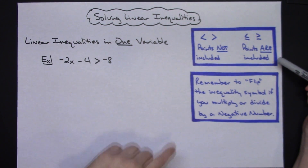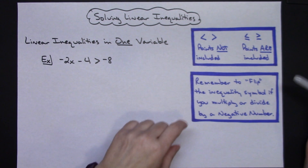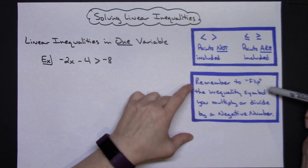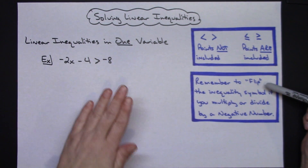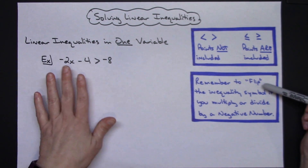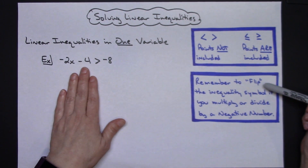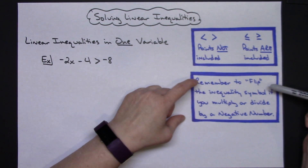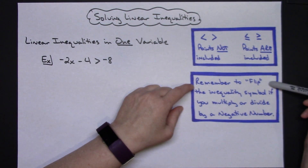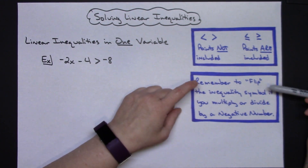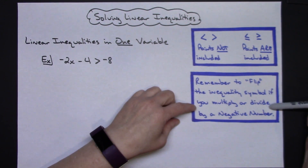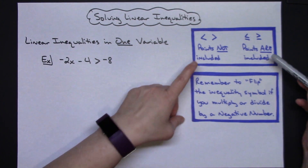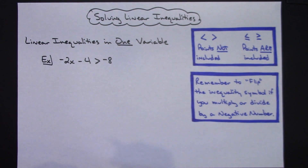When we get to linear inequalities in two variables we'll readdress this. The other thing to remember is that solving an inequality works just like an equation — you can move things from one side to the other, divide, and do inverse operations. The only difference is that if you multiply or divide by a negative number, you have to flip the inequality symbol. That is the only difference.